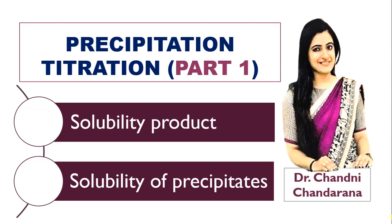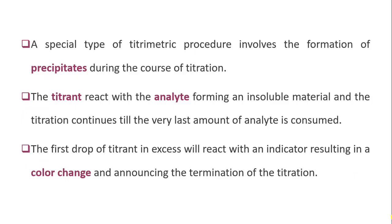Hello dear learners, in this online session we will see precipitation titration. Here there is a need to study about solubility product and solubility of precipitates. Precipitation titration is a special type of titrimetric procedure that involves the formation of precipitates during the course of titration. The name tells us that we will get a precipitate after the titration.